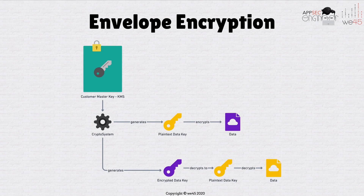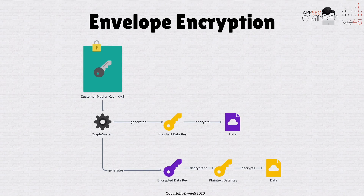So when you want to actually encrypt data — let's say a credit card number or a big file — what you should do is from the CMK, generate a secondary key. You can generate two versions: the plain text version, called the data key, and the encrypted version of that data key. You only store the encrypted version of the data key in your database. So the CMK generates a data key; the plain text version encrypts the data, and the encrypted version of that data key is stored in your database.